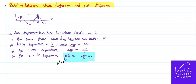Here, delta phi is called phase difference, delta x is called path difference, and hence this is the relation between phase difference and path difference of a particle in wave motion.